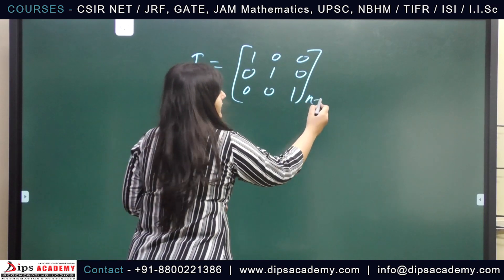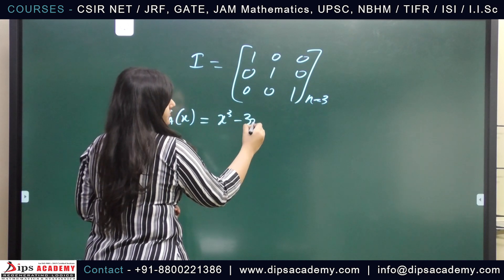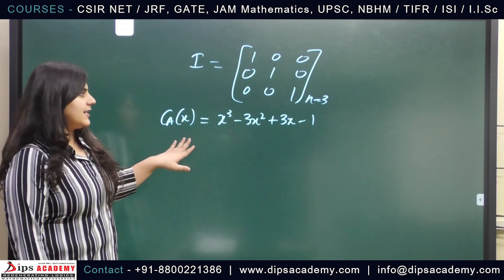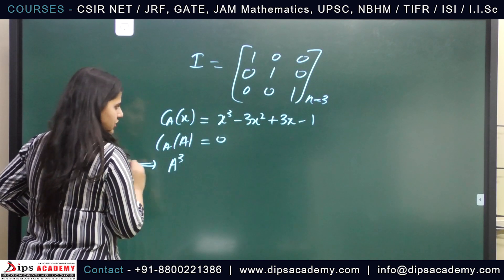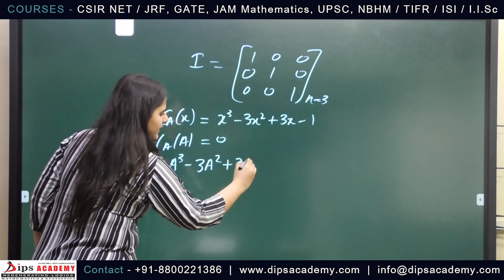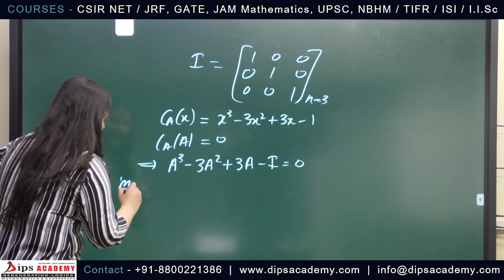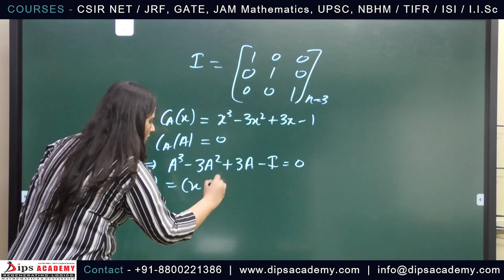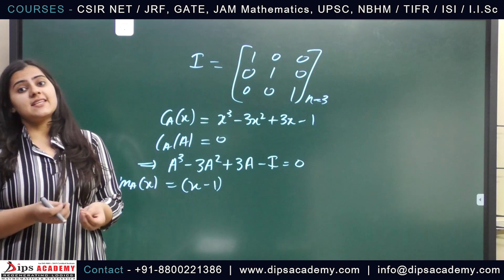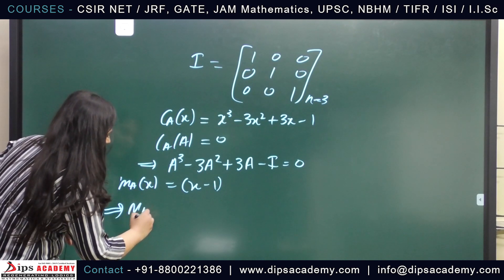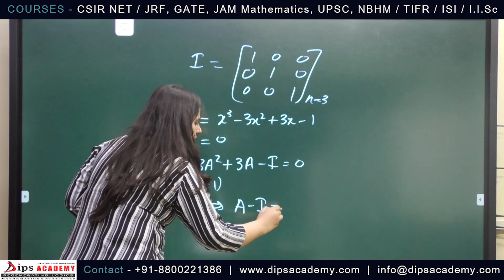Here n = 3, and the characteristic polynomial of the identity matrix is x³ - 3x² + 3x - 1. This implies C(A) = 0, which gives A³ - 3A² + 3A - I = 0. However, the minimal polynomial of the identity matrix is x - 1. A matrix also satisfies its minimal polynomial, and the minimal polynomial is the least annihilating polynomial for any matrix. So M(A) = 0, which implies A - I = 0.